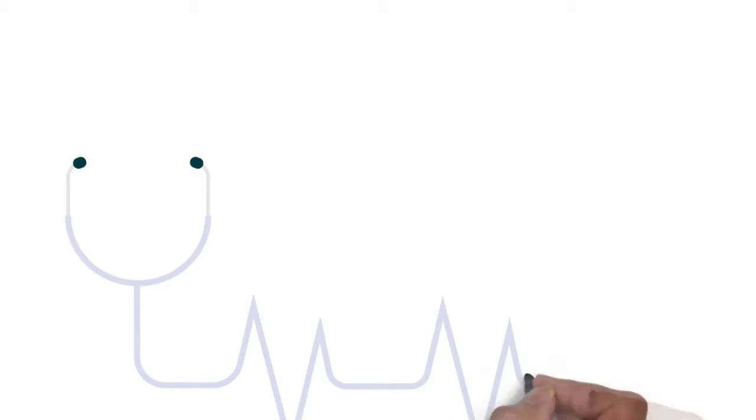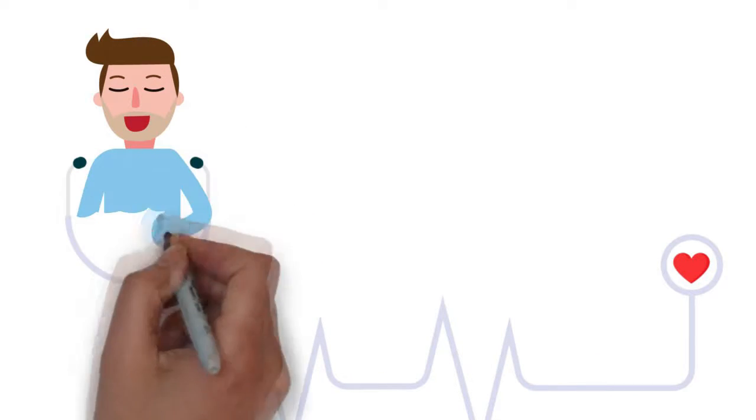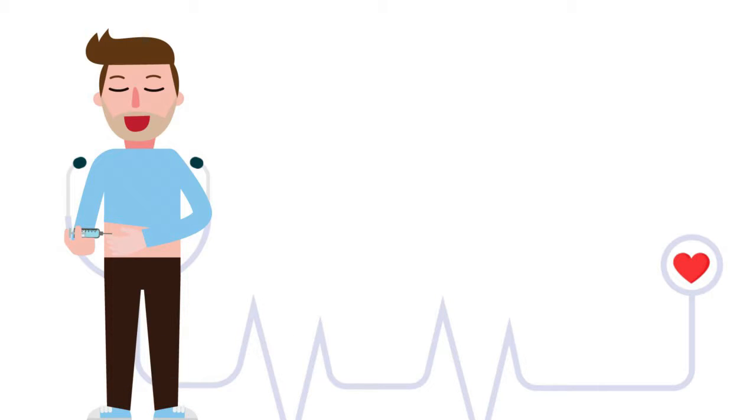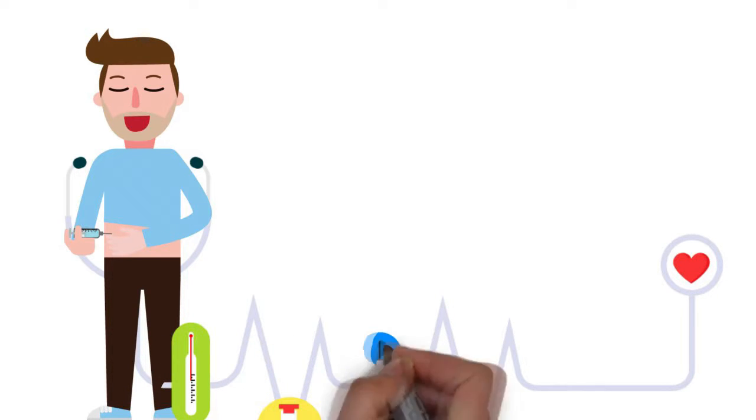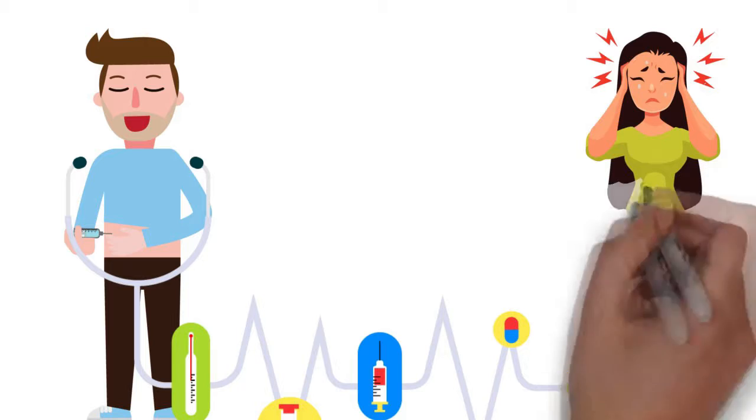But let's say you or a loved one already suffer from an illness or disease. If so, the Bell Health app can help monitor your systems so they don't get worse.